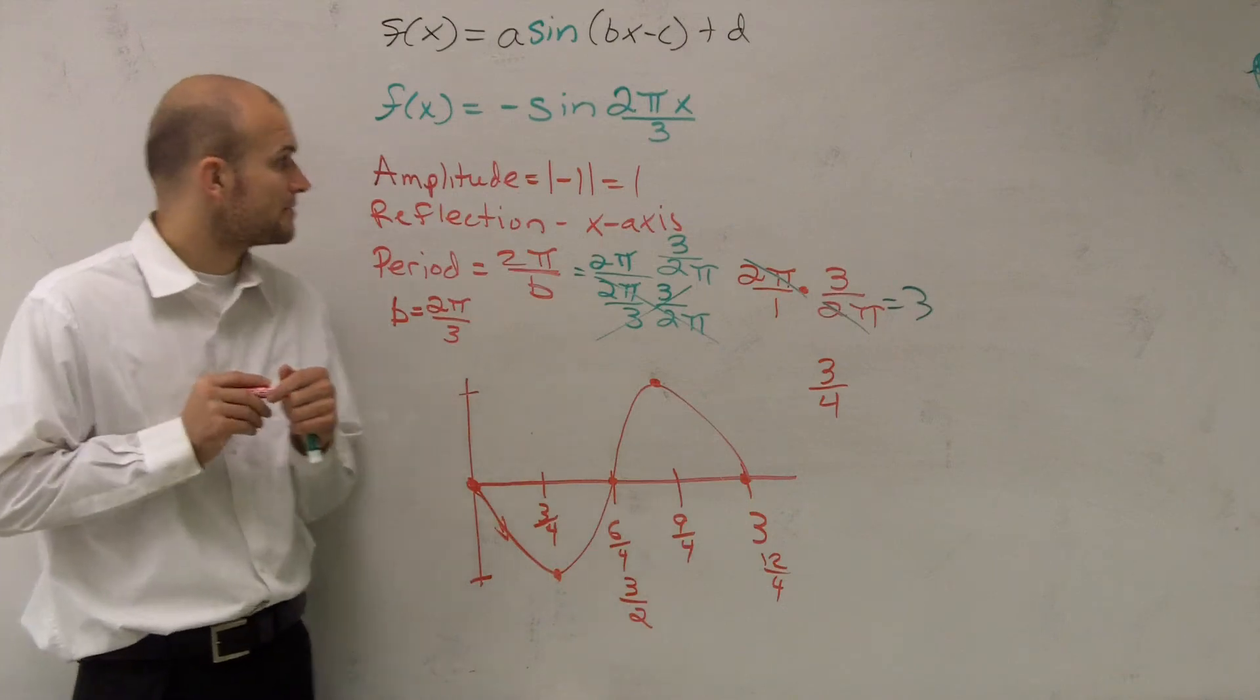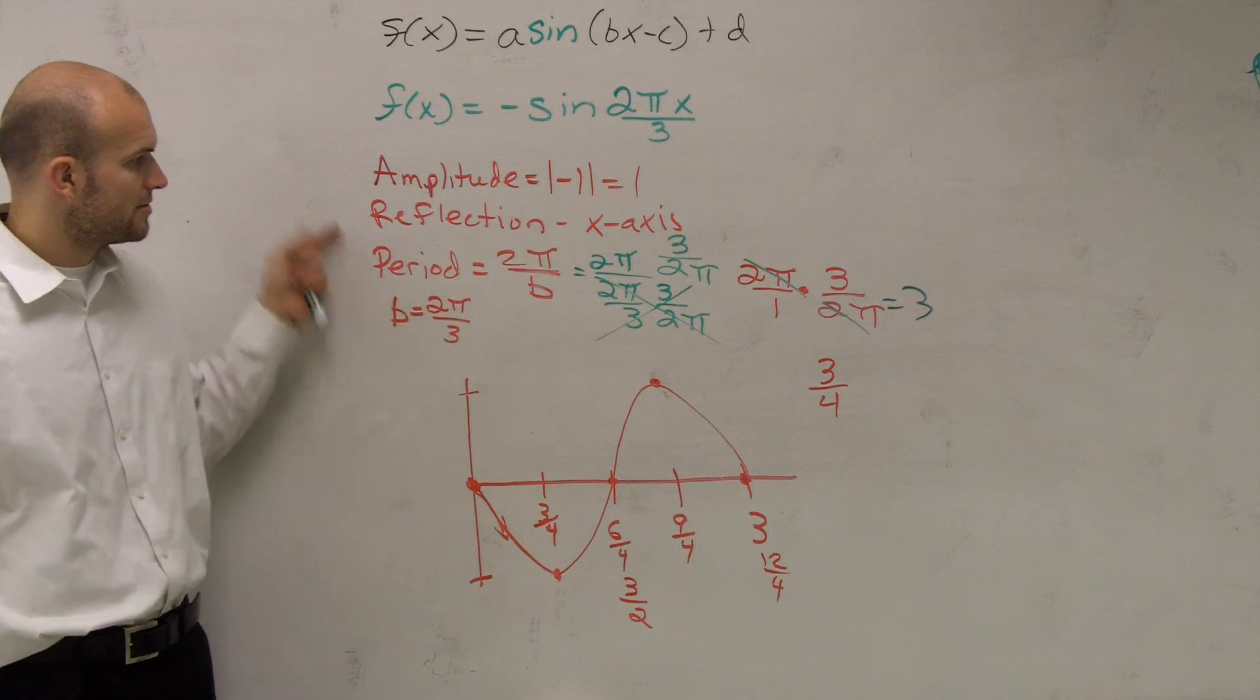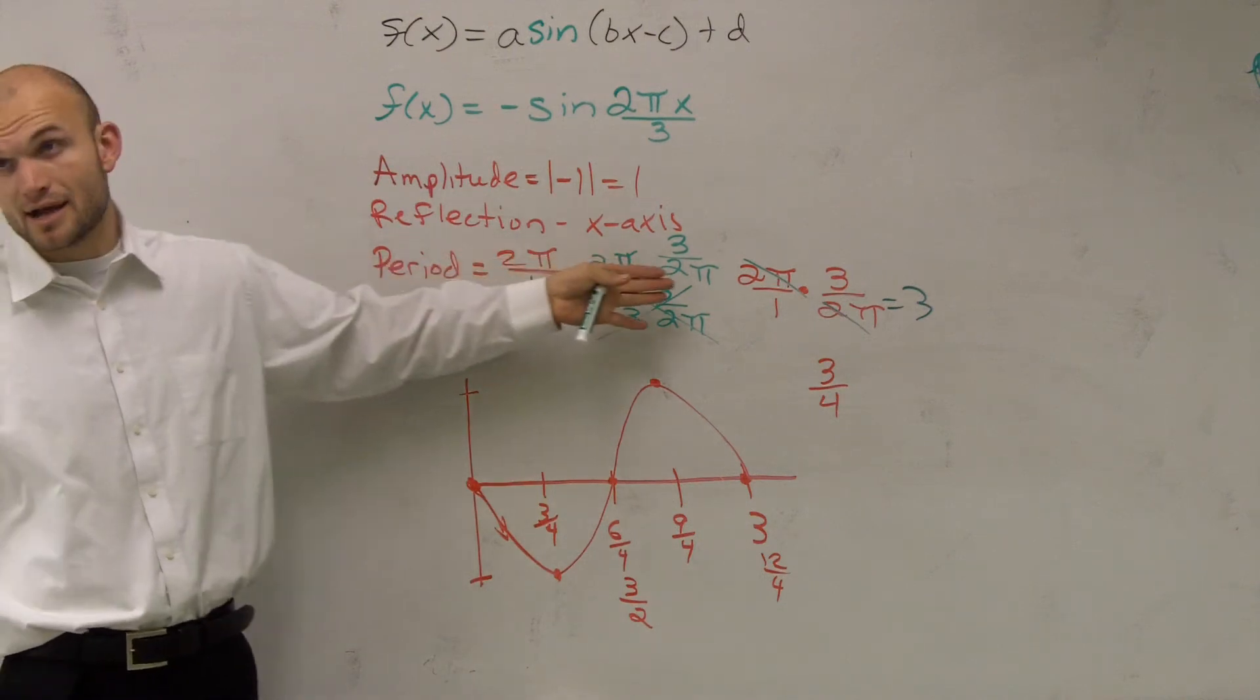So that's how you set up your graph. I'll just go through the steps one more time. First, find the amplitude. Determine if there's a reflection. That's going to tell you which direction, down or up. Determine what your period is. You're going to have some math sometimes.